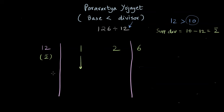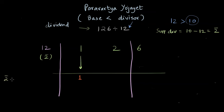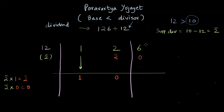We take the first digit 1 of the dividend and bring it down. We then multiply the supplement divisor minus two by 1, giving minus two, and write it below the second digit of the dividend. Adding: 2 minus 2 gives zero. We then multiply the supplement divisor by zero, which gives zero. We place zero in the last column, and the result in the remainder column is 6. We stop here because we have a one-digit remainder less than the divisor.